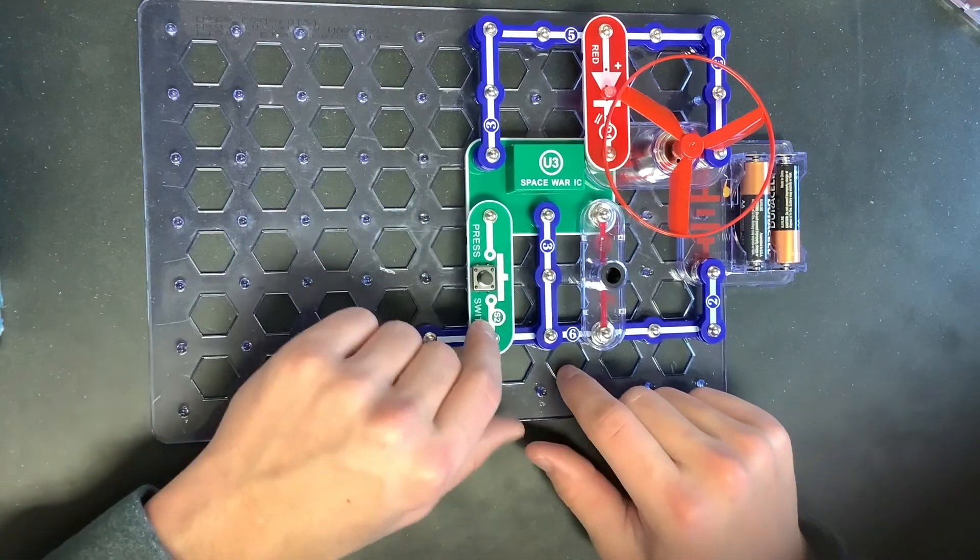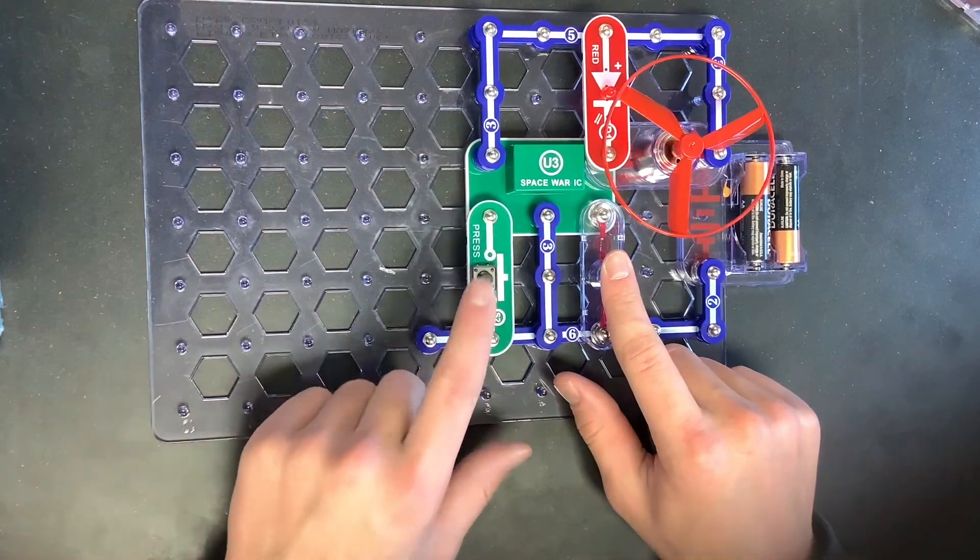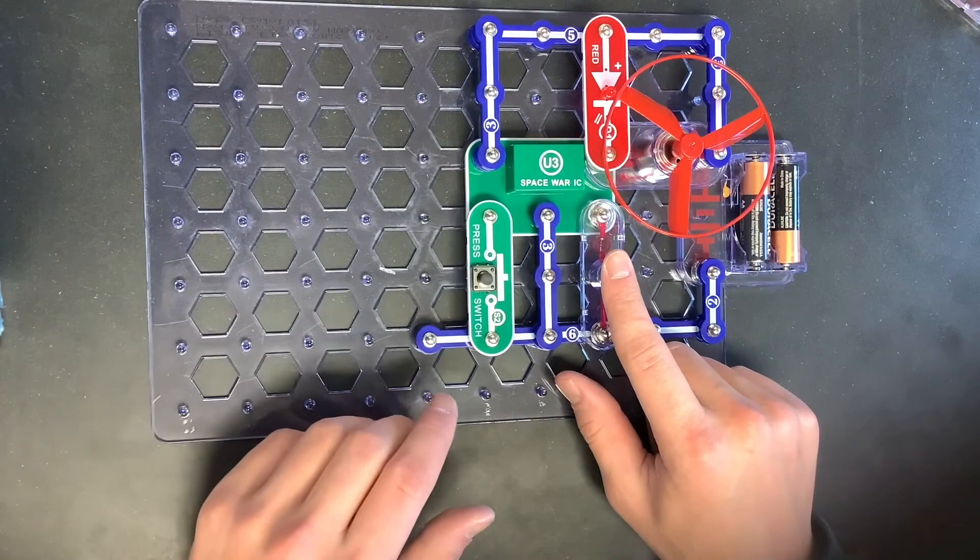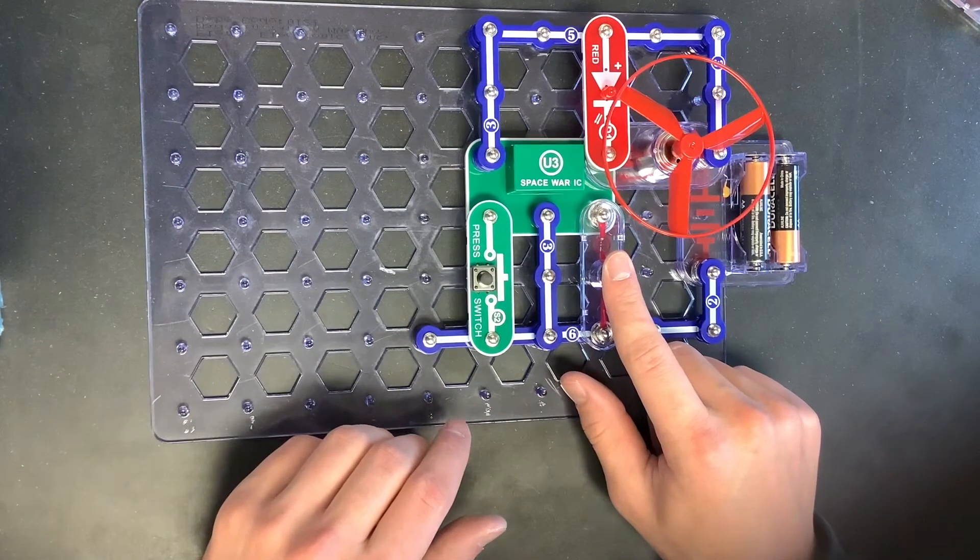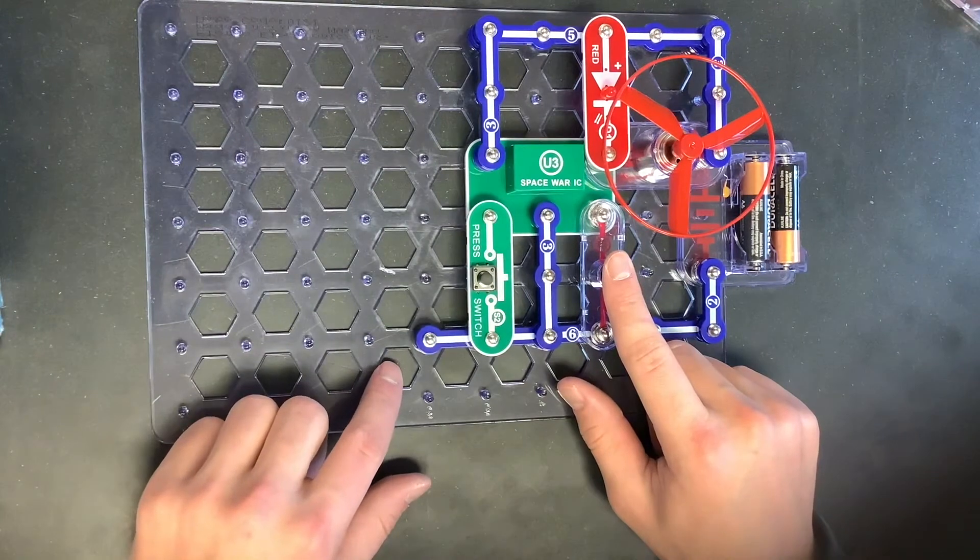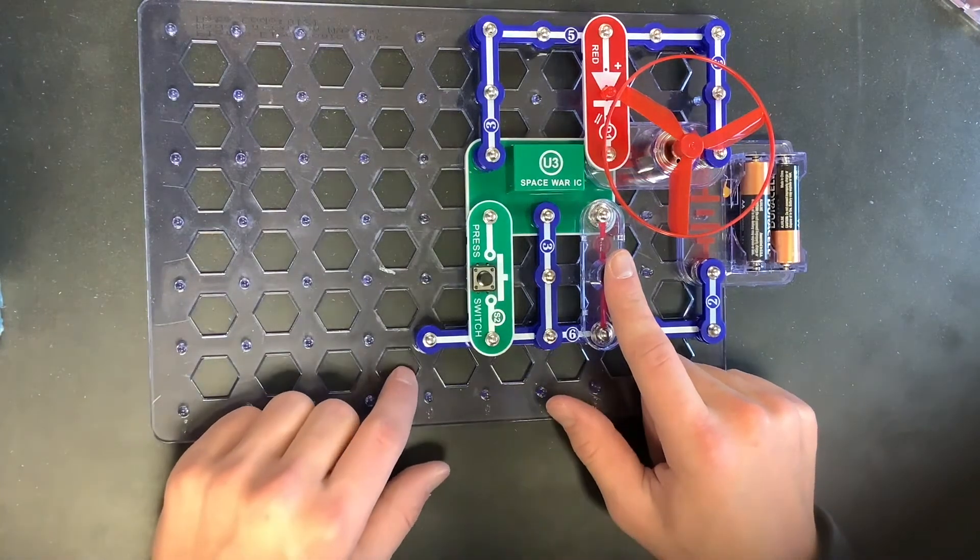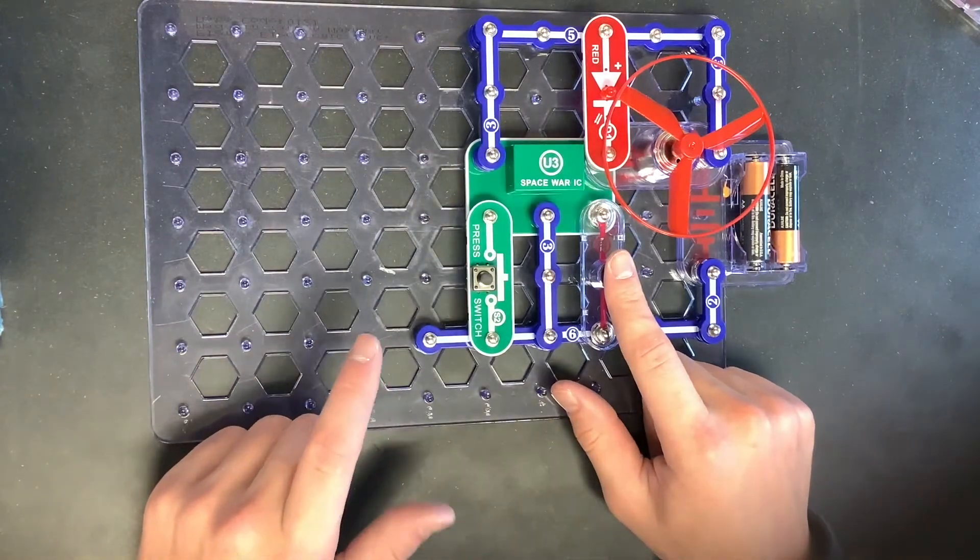So you can go through this and keep doing this, and then there'll be a lot of different variations. And then you can just see and explore what that space war IC chip does. It's kind of cool to see all the different variations it can do.